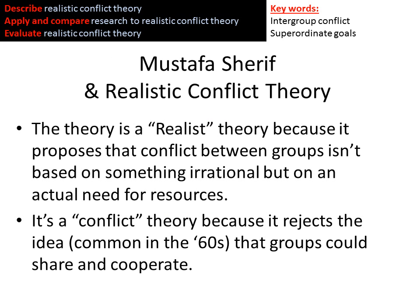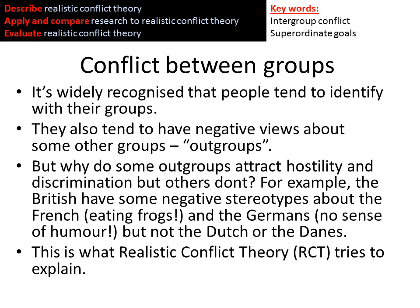We call it a 'realist' theory because it proposes that conflict between groups isn't based on something irrational, but on an actual need for resources. It's a 'conflict' theory because it rejects the idea that groups can simply share and cooperate. Realistic Conflict Theory suggests that it's the conflict between groups that is the important factor leading to prejudice.